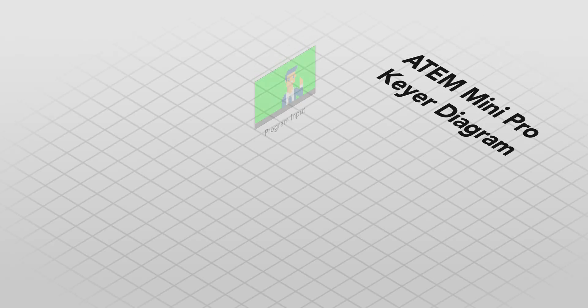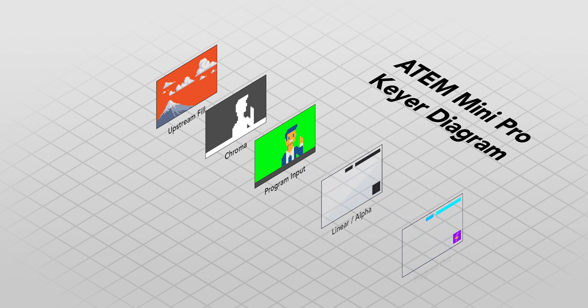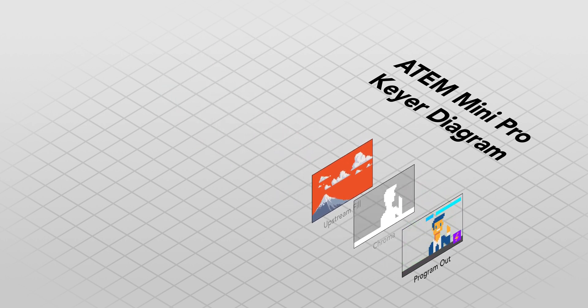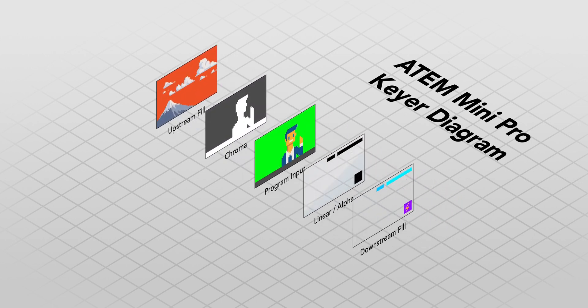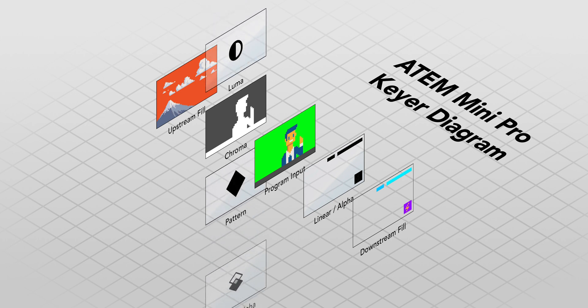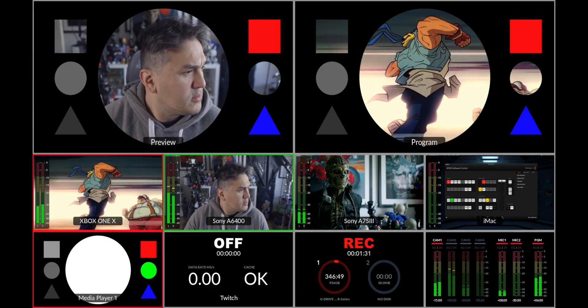In addition, each key has specific masking capabilities that allow you to control what you see at any given moment. To help illustrate this, I've created a diagram that mirrors the options of the switcher. Now here's where it gets a little tricky. The upstream and downstream key have different masking capabilities. The upstream key can mask using a luma key, which is sometimes referred to as a self key, because the same video source is used for cutting the key and overlaying the video image.